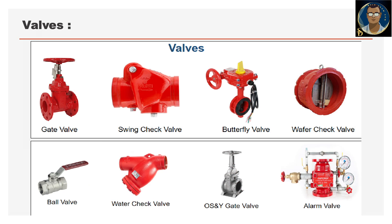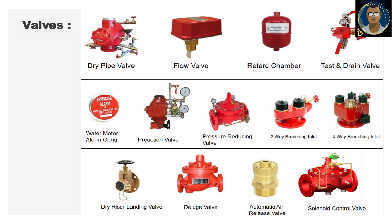Valves are very important because they hold the high-pressure water in the hoses. The types of valves used for fire safety include the gate valve, swing check valve (one-way flow), butterfly valve, wafer check valve (also one-way flow), ball valve, water check valve, OS and Y gate valve, and alarm valve. These are the main valves used in fire safety.